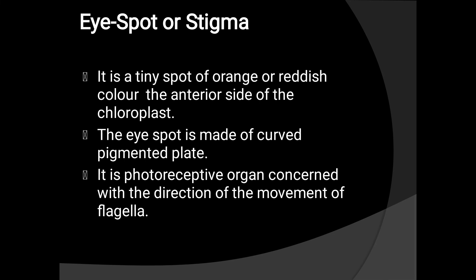Eye spot or stigma. It is a tiny spot of orange or reddish color located on the interior side of the chloroplast. The eye spot is made up of carotenoid pigmented plates. It is a photoreceptive organ concerned with directing the movement of the flagella.